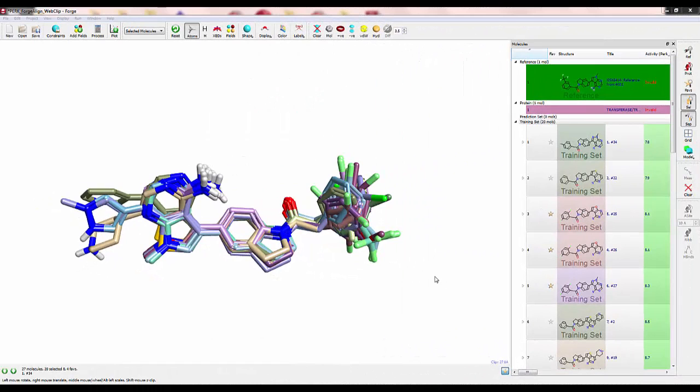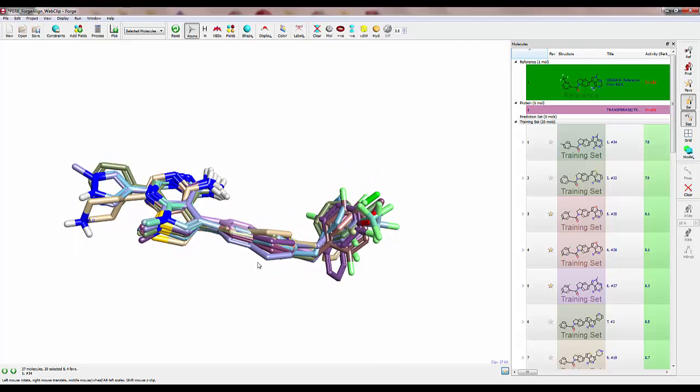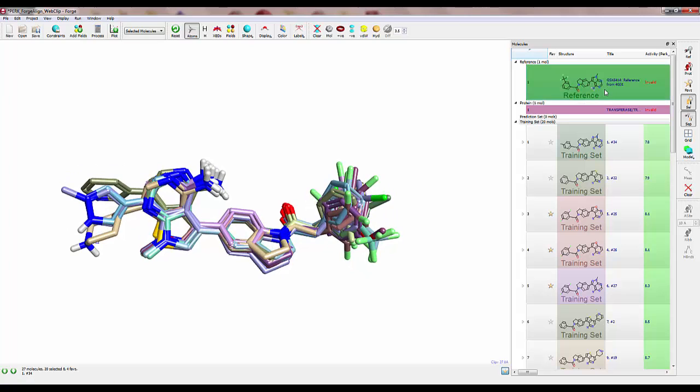In this file, we have a set of structures aligned to the ligand from PDB 4G31 in our usual Cresset alignment method using 50% fields, 50% shape.